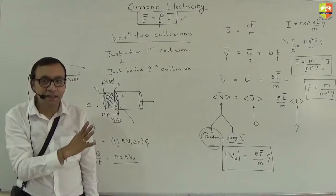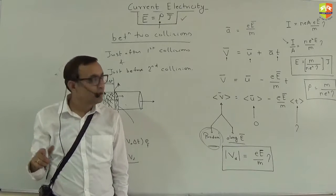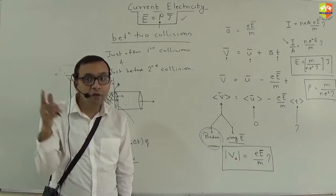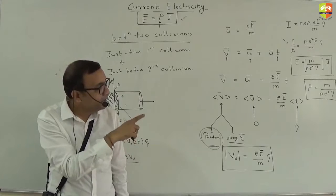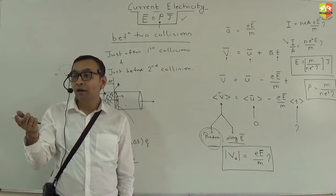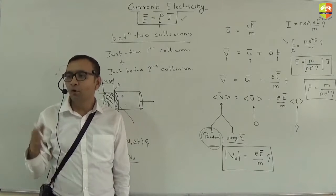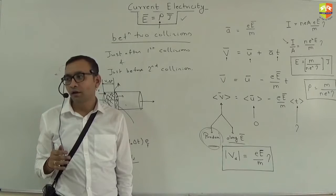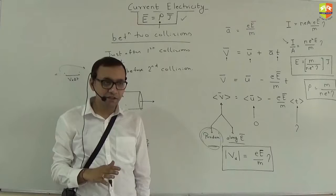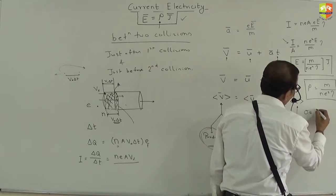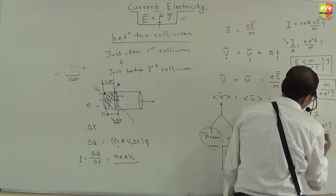Does this expression for ρ = m/(ne²τ) make sense? If mass m is more, inertia is more so electrons move less — ρ should be more. If charge e is more, current is more — ρ should be less, hence e² is in the denominator. If τ (time between collisions) is more, ρ should be less — τ is in the denominator. More free electrons n means more current, so n is also in the denominator. Conductivity σ = 1/ρ = ne²τ/m.